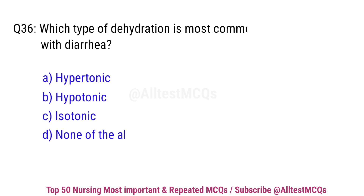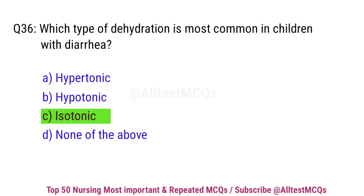Question No. 36. Which type of dehydration is most common in children with diarrhea? Right option is C. Isotonic.